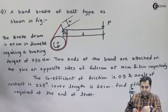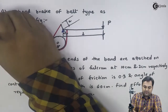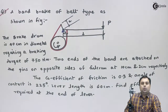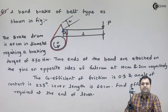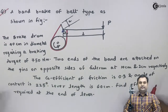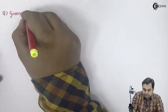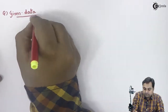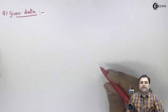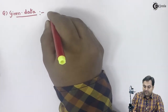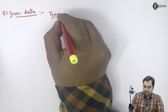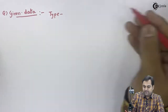Here we have a question based on differential band brake. Whatever is given here I will write in the form of data first. So let us start this problem by writing the data. First of all I will mention the type of brake — here we are having a differential band brake.